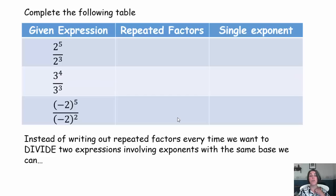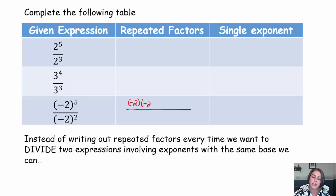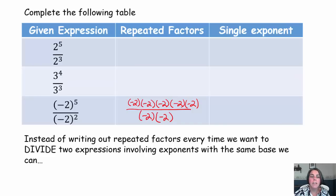I'm going to complete the third row with you right now, so please be ready. Negative two to the fifth power in our numerator means I need to write out five factors of negative two in that numerator. Negative two to the second power means I write out two factors of negative two in the denominator. I kept my fraction bar.